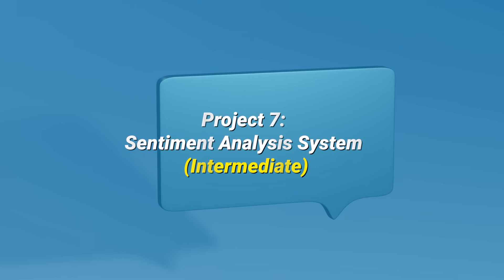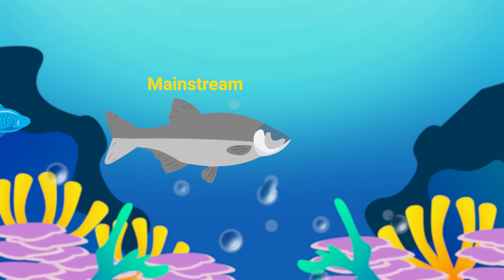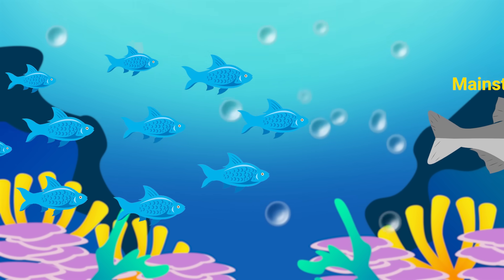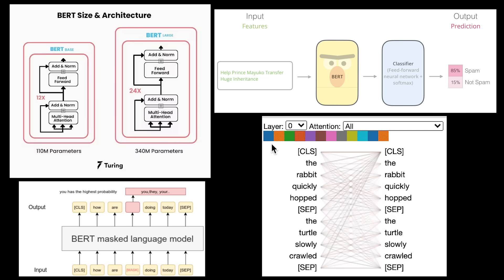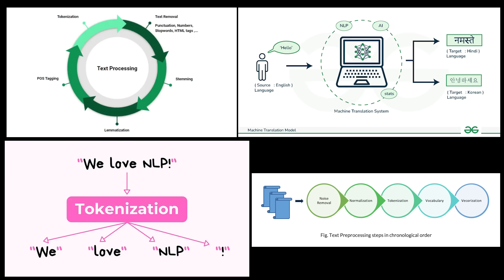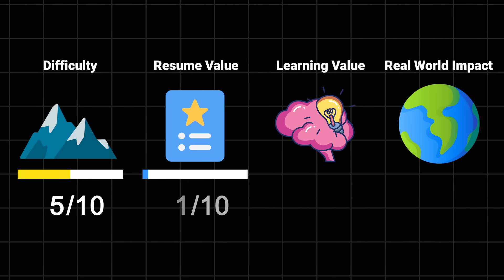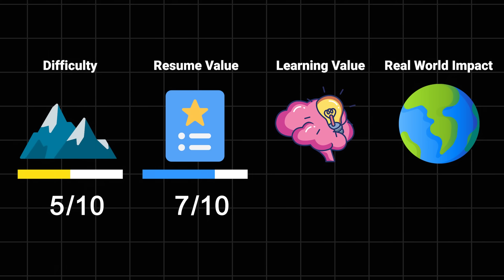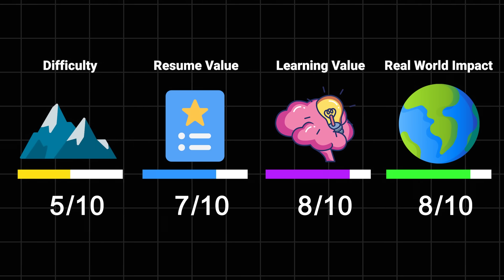Sentiment analysis system. So yes, I just made fun of it, but of course we still want to do some mainstream stuff. But we're not just going to use pre-trained models. You're going to build something that actually works on real-world text, like analyzing product reviews or Twitter posts. The trick here isn't just throwing BERT at everything, though we'll use that too. You'll learn about text preprocessing, handling different languages, and dealing with emojis - yes, they matter. Difficulty: 5 out of 10. Resume value: 7 out of 10 because companies love NLP projects. Learning value: 8 out of 10. And impact: 8 out of 10 because this is something you can actually use in the real world. And you want to build the next ChatGPT, right? Gotta start somewhere.